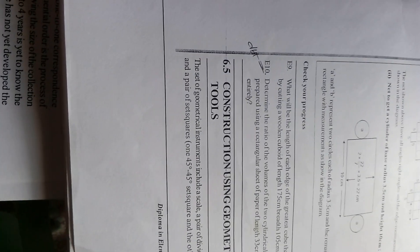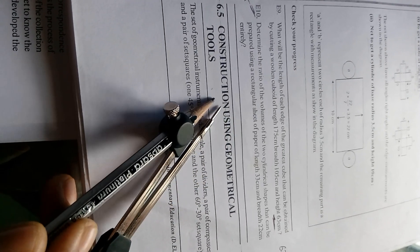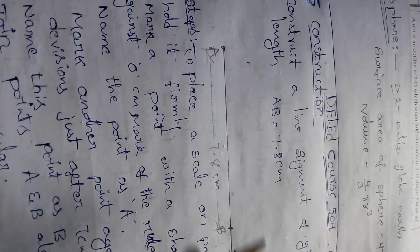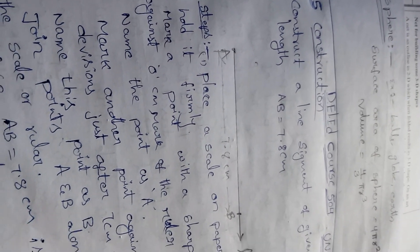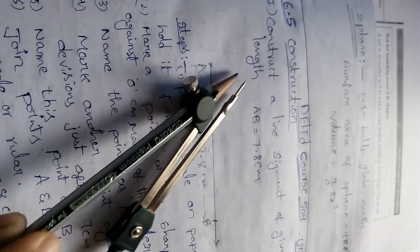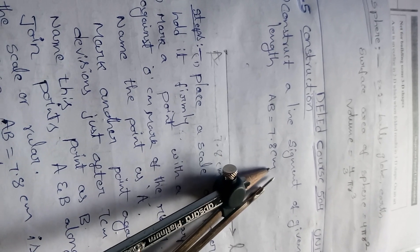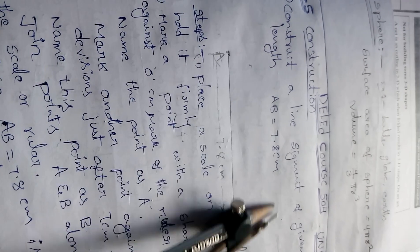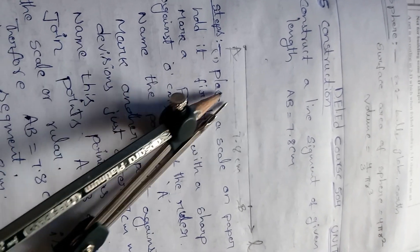Hello friends, today I am going to discuss the topics of construction using geometrical tools. I'm going to give small examples and how to construct these types of questions that may be asked in exams. For five marks, construct a line segment of a given length: AB is equal to 7.8 centimeters. They might give this type of question, so we have to draw and write all the steps of the construction procedure.